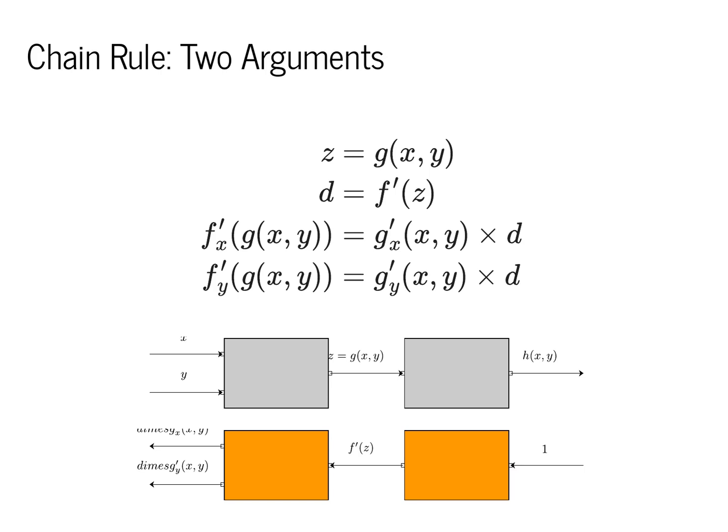That means the second box doesn't even have to know that the first box took in two arguments. It just computes its individual local derivative, passes that value back, which is then multiplied by the derivative of the first box.